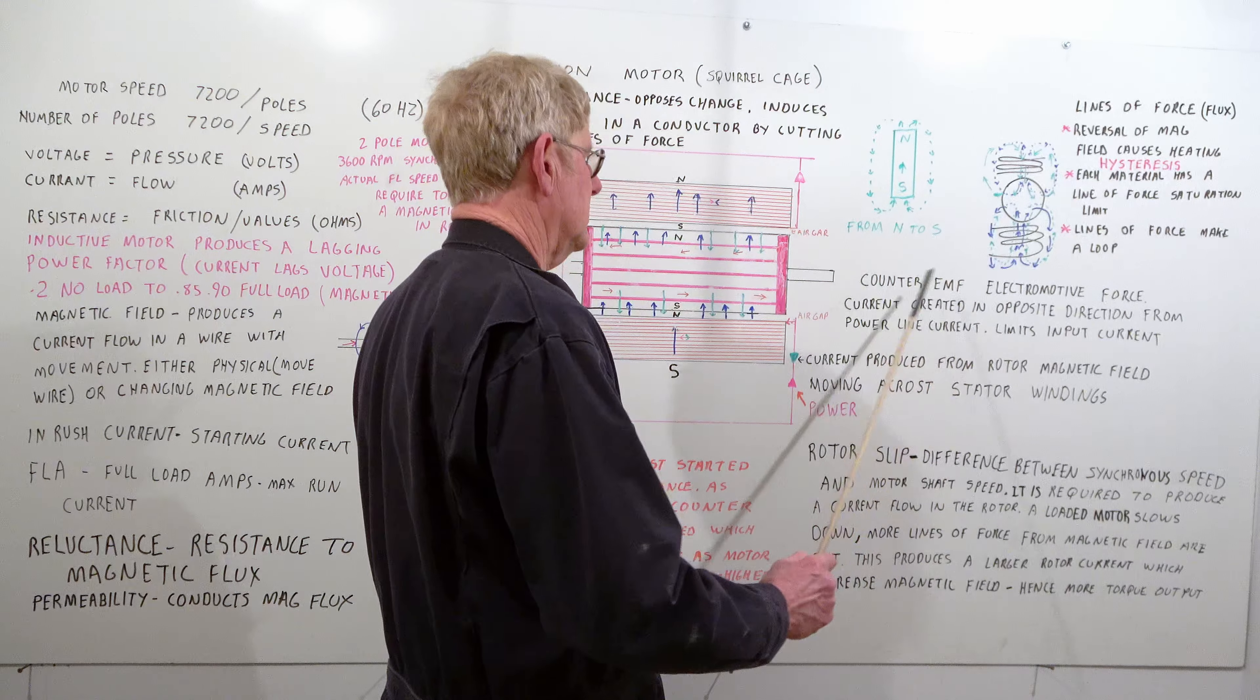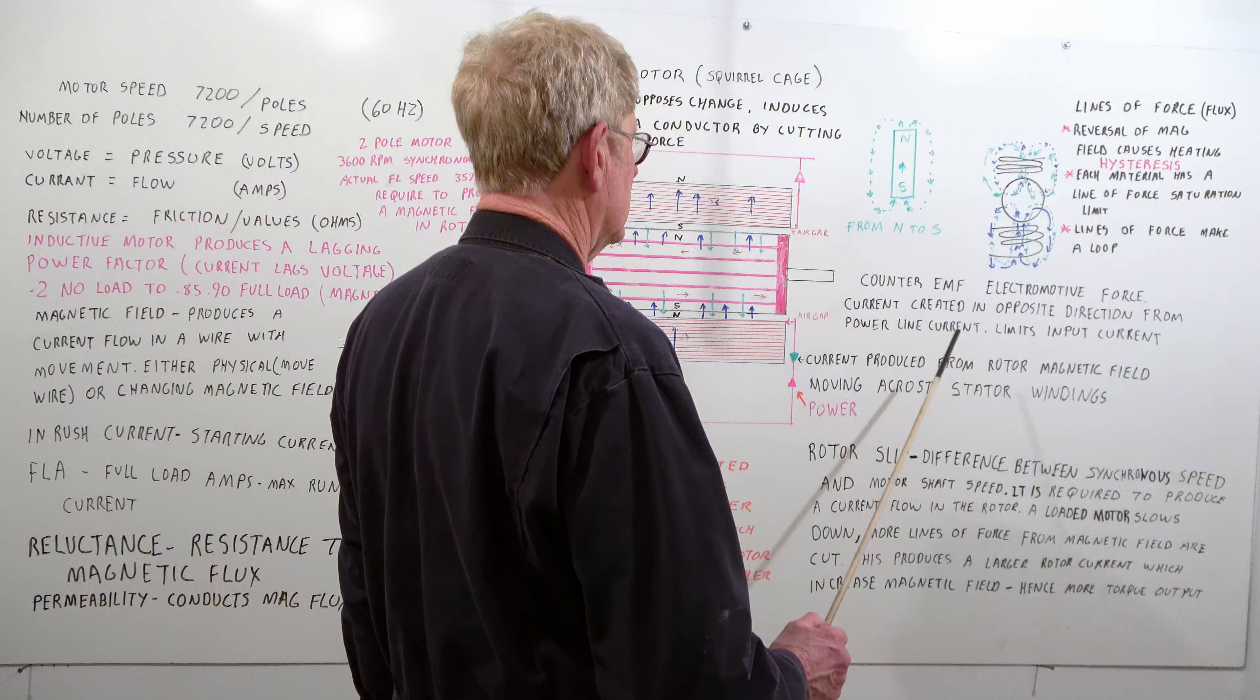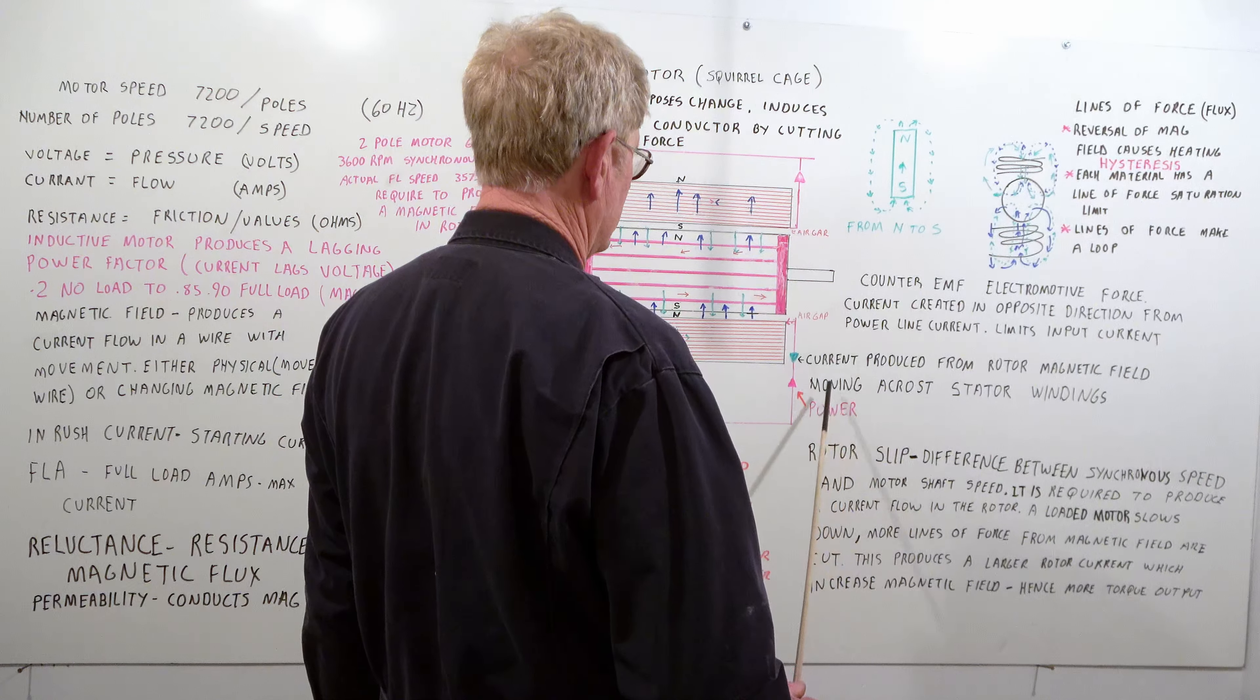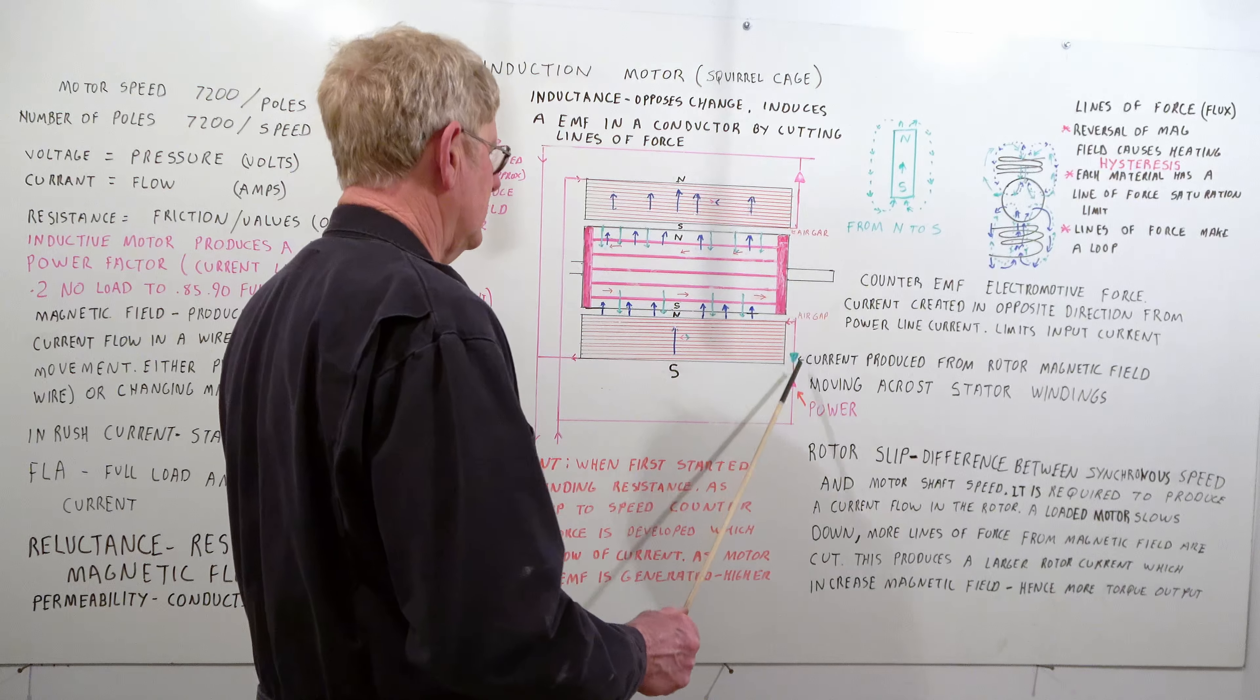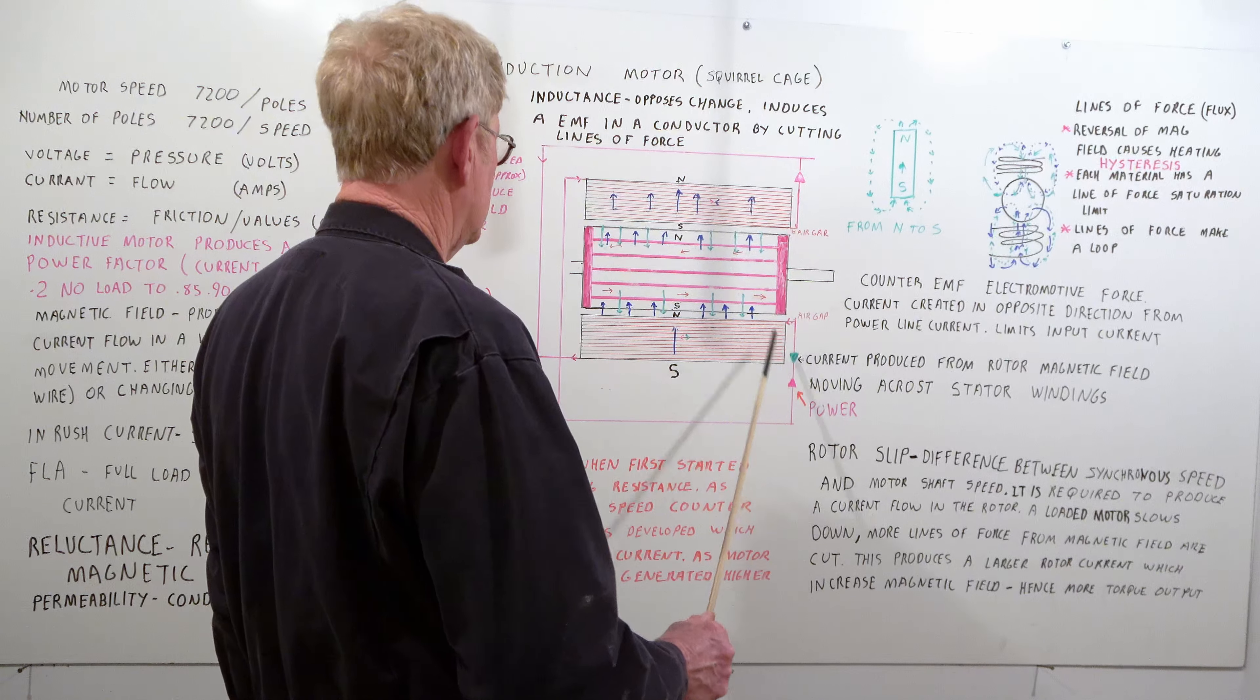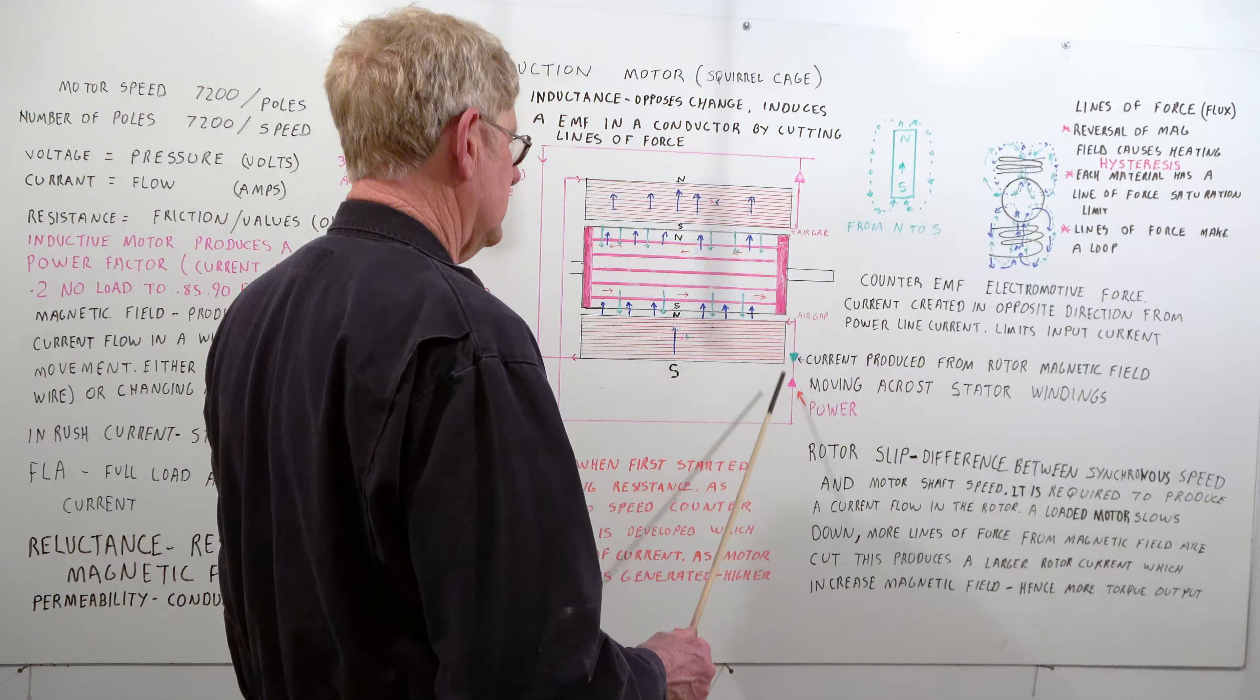Counter EMF, electromotive force. Current created in the opposite direction from the power line current. Limits input current. Current produced from the rotating magnetic field moving across the stator windings. Kind of a simple drawing here. You got the current produced from the rotor pushing this way and the power. It's limited amount of power comes in. It actually takes place in here. Just kind of a simple way of thinking of it.